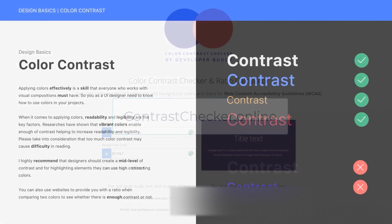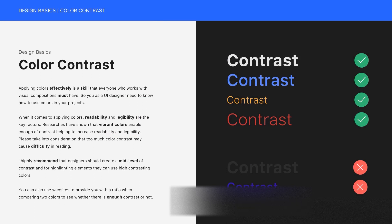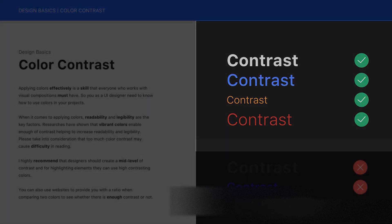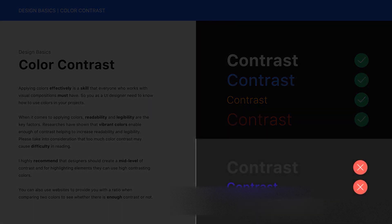If you look at the examples on the right, we have six different colors. As you can see, the first four are acceptable and have enough contrast, but the others are not readable. So when we are designing a user interface, we need to pay attention to colors a lot.